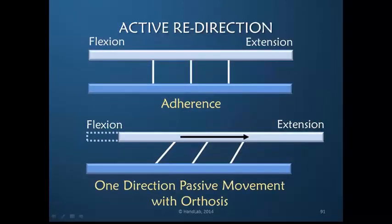Let's look at this schematic drawing to see if this helps us conceptualize this. Here is the direction of flexion and here is the direction of extension. Imagine this is bone and this is an overlying tendon - tendon on bone, it's adherent. The adherence limits motion. We apply an orthosis pushing the finger into extension and with that we move the adherence in one direction, allowing that kind of motion. But by pushing it in that direction, we are also holding it still, which means there's no pumping mechanism and no differential movement.